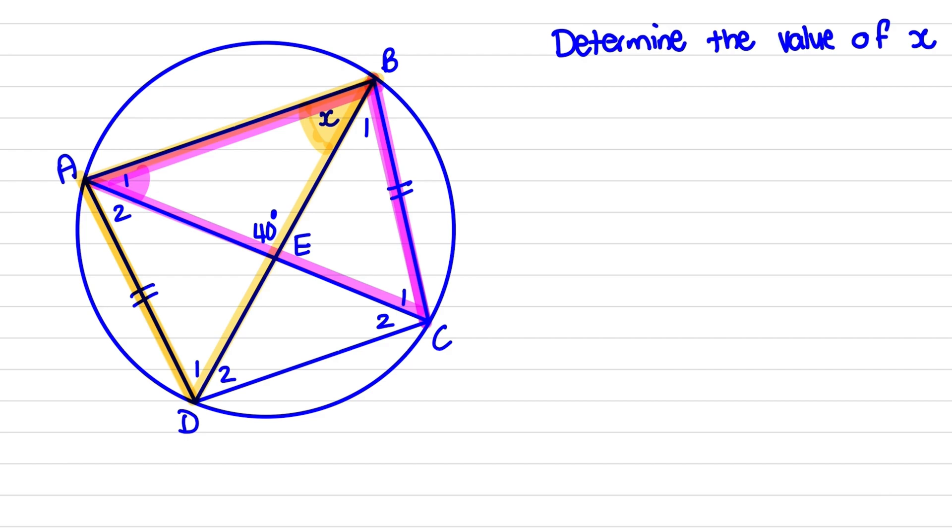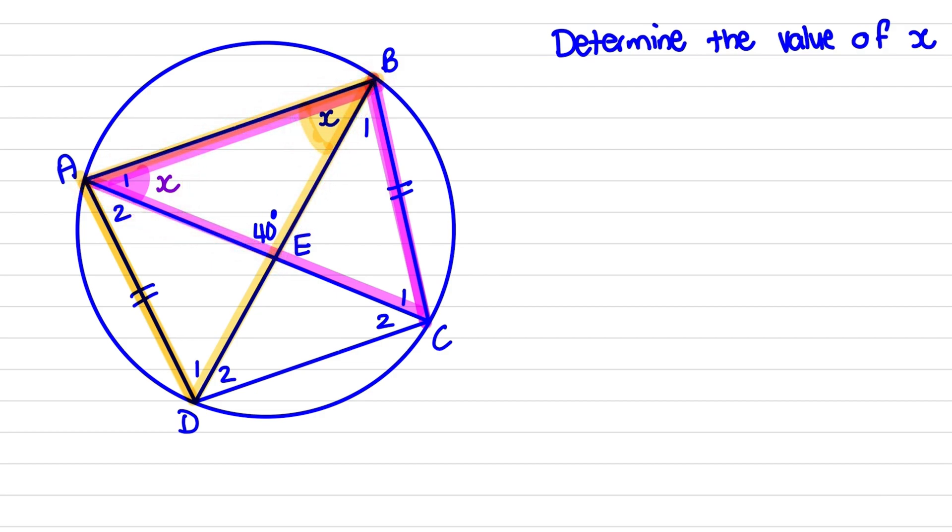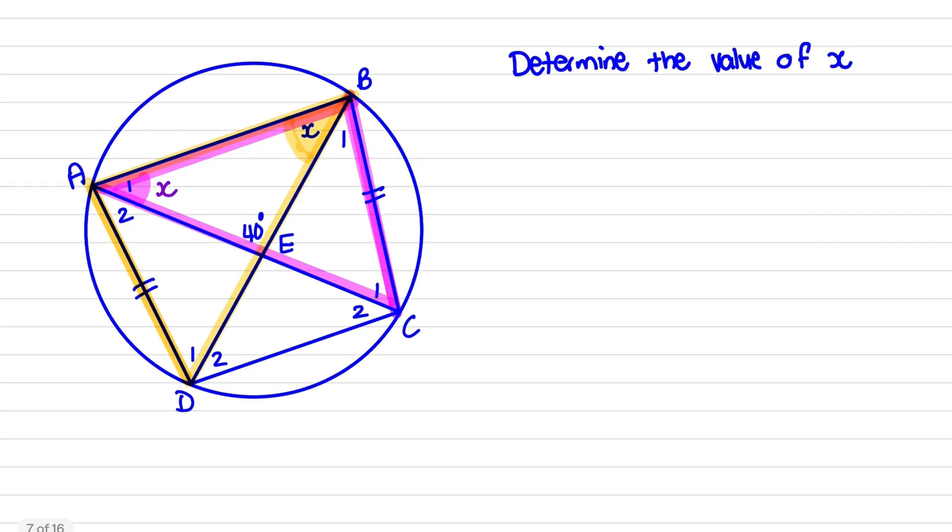So in the triangle ABE, we can find two angles equal to x and then use sum of angles within a triangle to solve x. So let us write down that information.